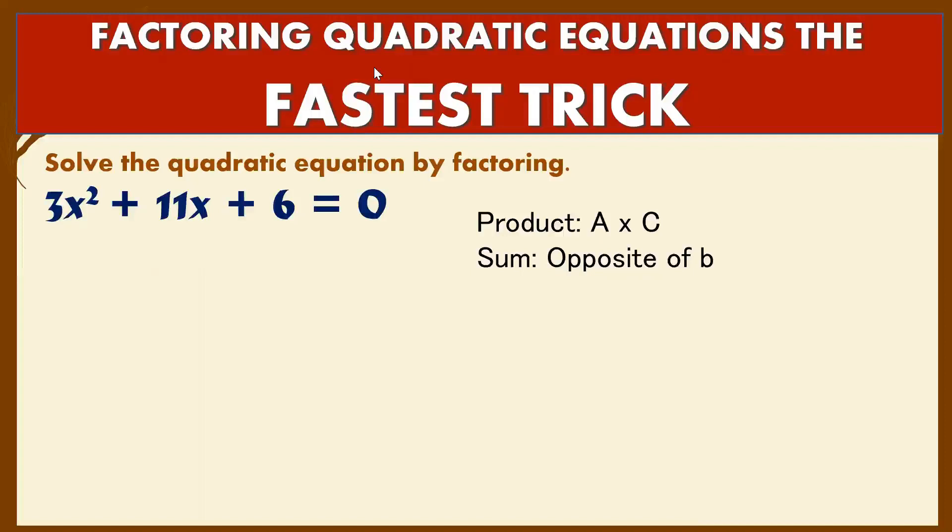Welcome back to Math Wizard Tutor. Today's video is about factoring quadratic equations using the fastest trick. Maybe some of you are wondering how to make a trick on finding the factors and roots of quadratic equations. Here we have example: 3x² + 11x + 6 = 0.